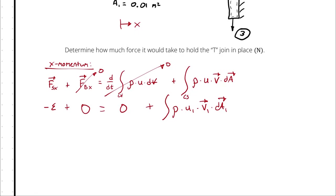This would be density times u1 times velocity vector 1, dA1. So, I have negative epsilon plus 0 is equal to 0 plus the integral across the control surface at state 1.